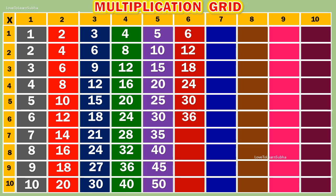6 6s are 36. 6 7s are 42. 6 8s are 48. 6 9s are 54. 6 10s are 60.